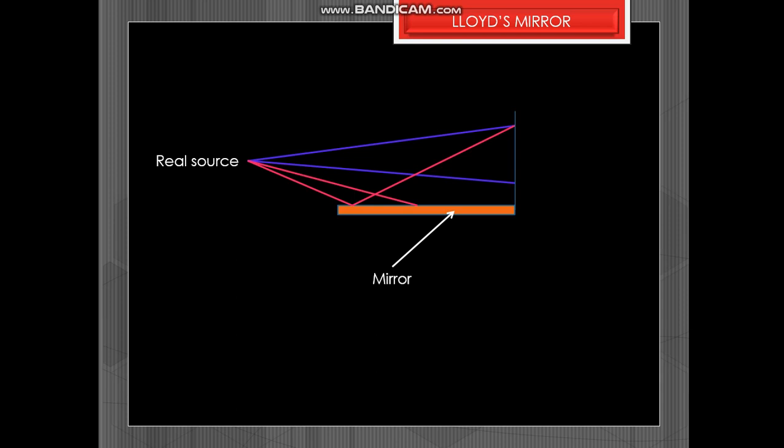This is the Lloyd's mirror. This is the Lloyd's mirror. This is the real source of light emitting waves directly on the screen as well as by reflection from the mirror. So we have lot of rays like this coming directly as well as by reflection.